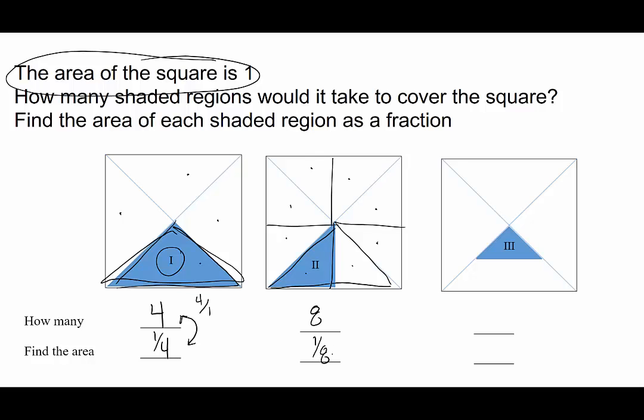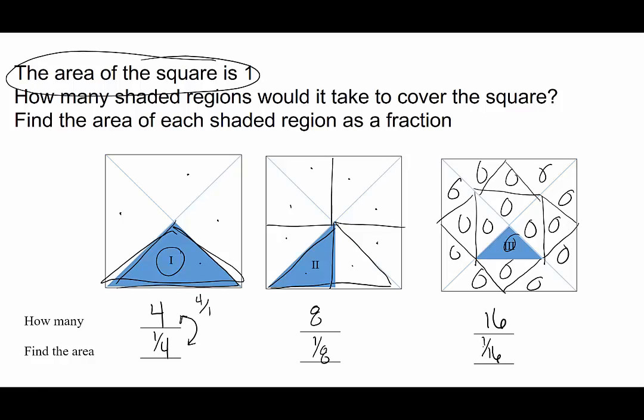They have a reciprocal relationship. Now the third square. In order to find how many triangles it would take to cover the square, I need to draw in all the triangles. It would take 16 region 3 to cover the square. That makes the area of region 3, or the value of region 3, 1 sixteenth.